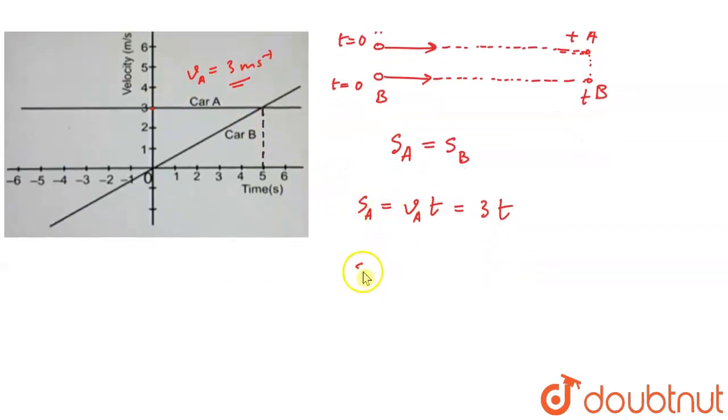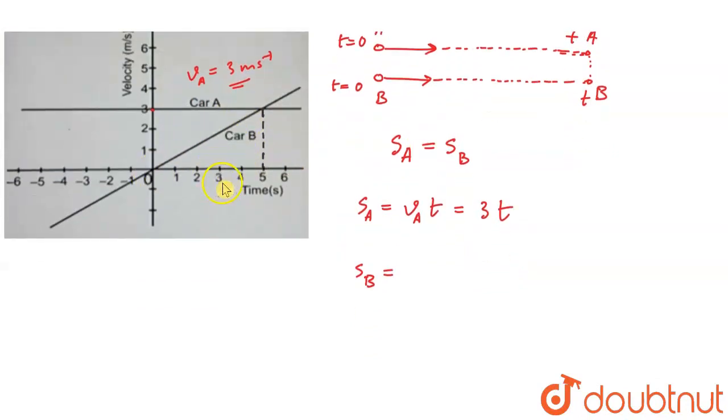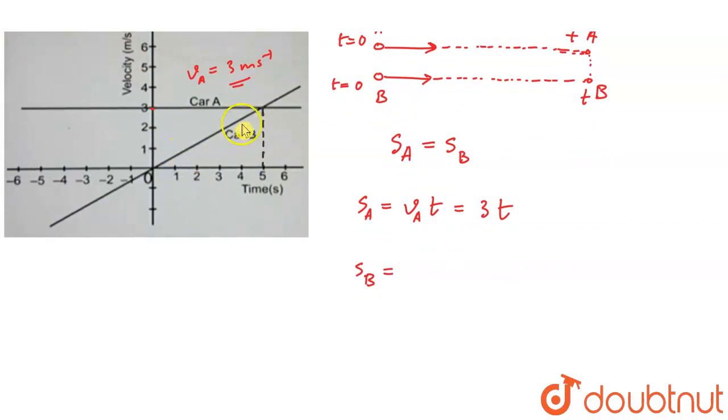Now for s_B. Car B has constant acceleration. The acceleration for car B will be the slope of this line. Acceleration a will be equal to rise over run, which is perpendicular divided by base.